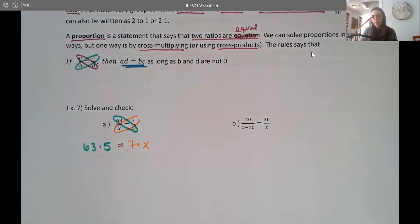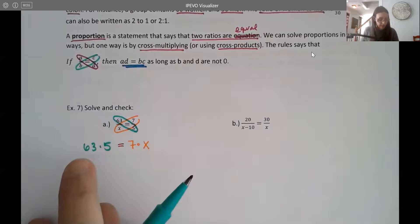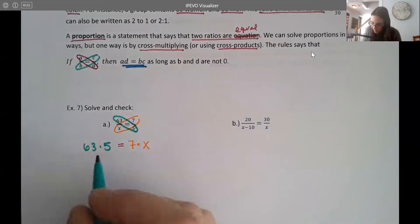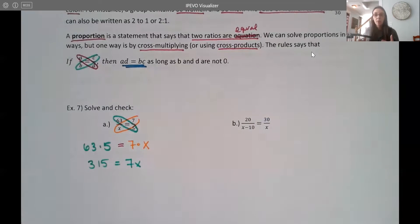Now I know some of this you can do in your head. So if you feel comfortable doing some of this work in your head, like 7 times X, you could just write 7X. That would be completely fine as well. But if you're stuck, just take that extra step and write it out. So let's see, 63 times 5 is 315. 7 times X is just 7X.